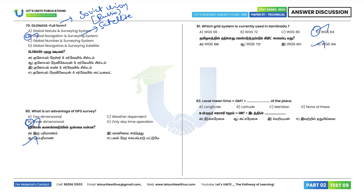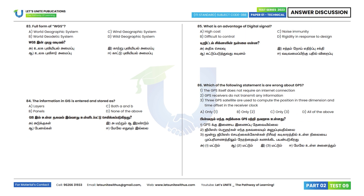Question 82: Local mean time equals Greenwich mean time plus the longitude of the place. Option A is the correct answer. Question 83: What is the full form of WGS? WGS stands for World Geodetic System. Option B is the correct answer.